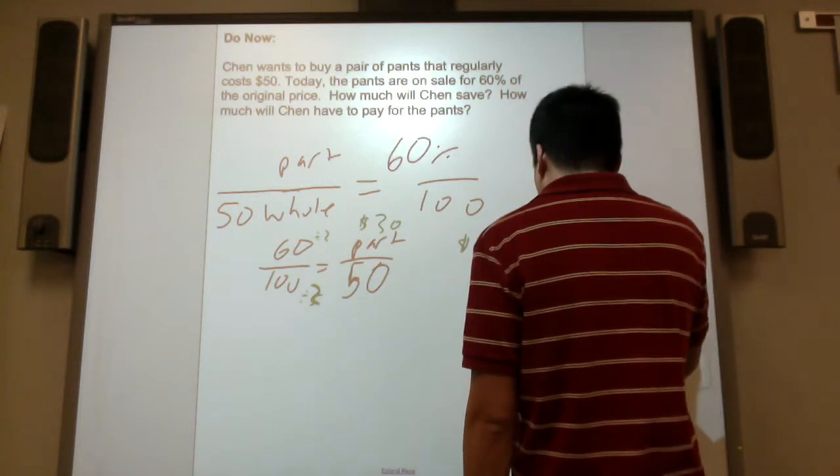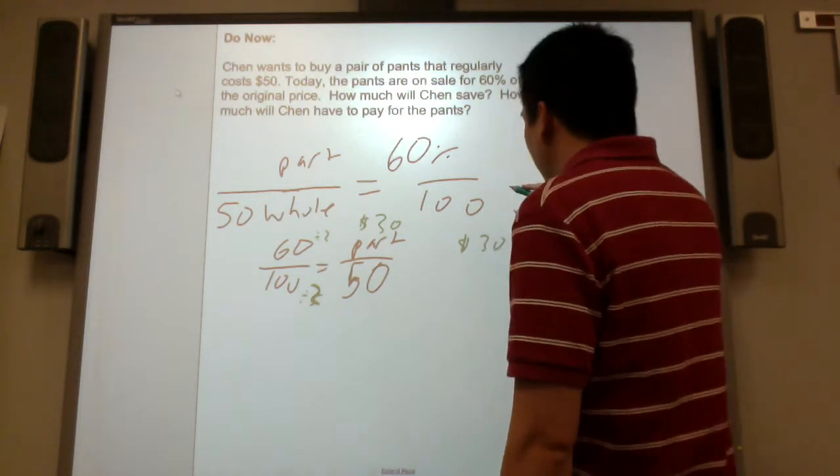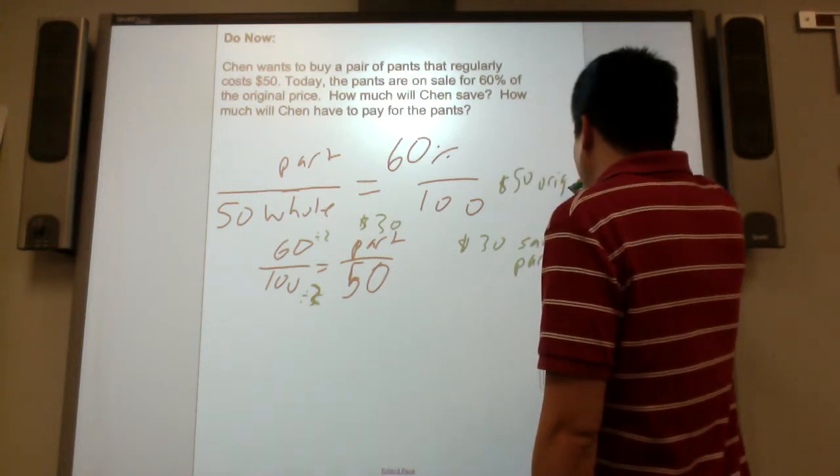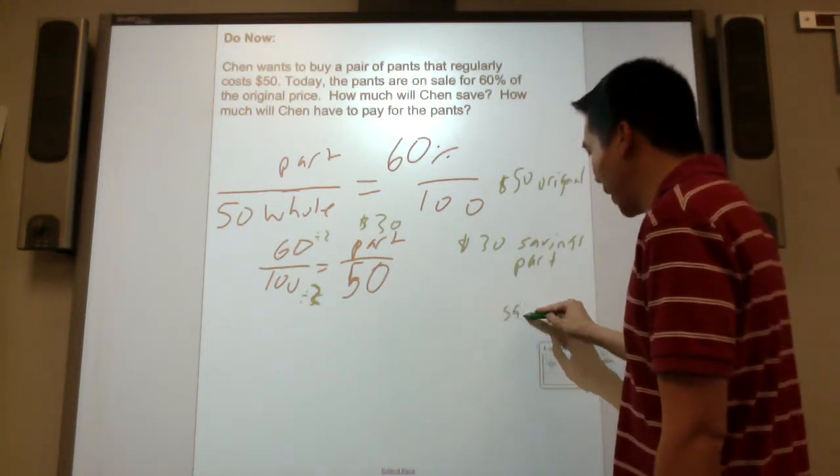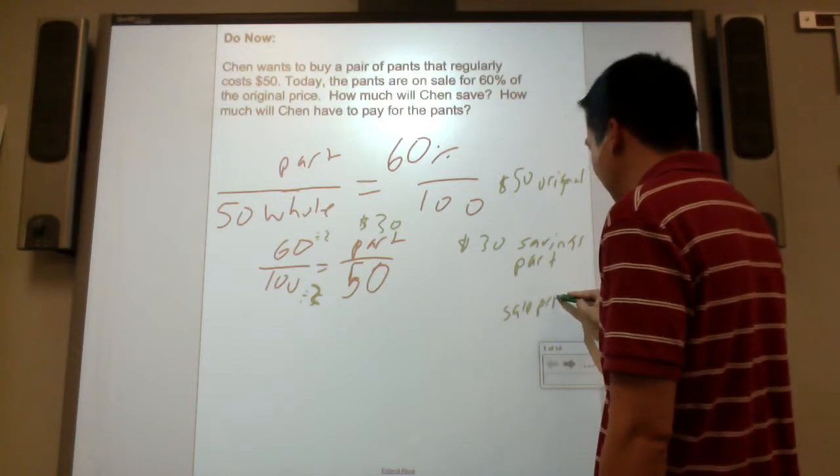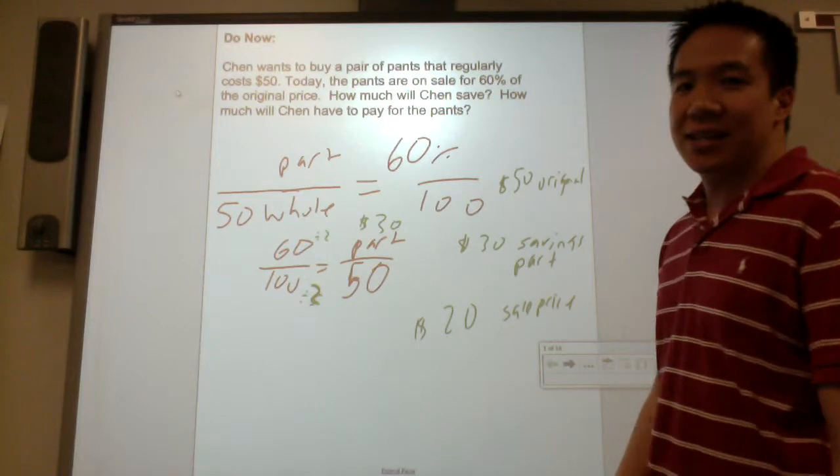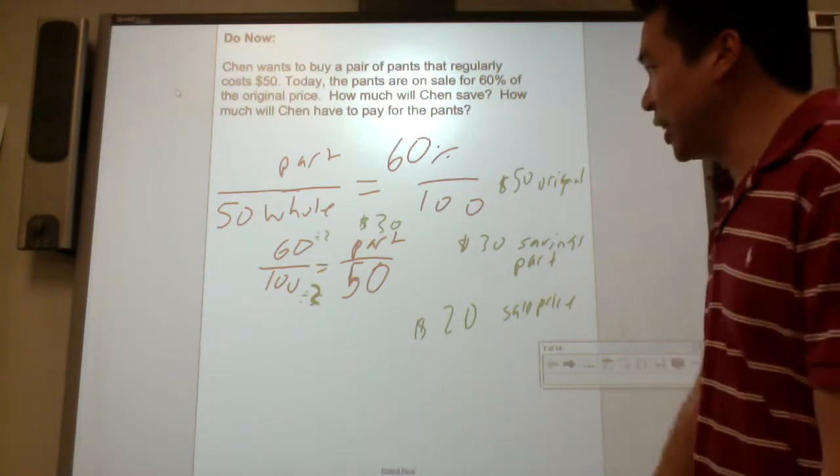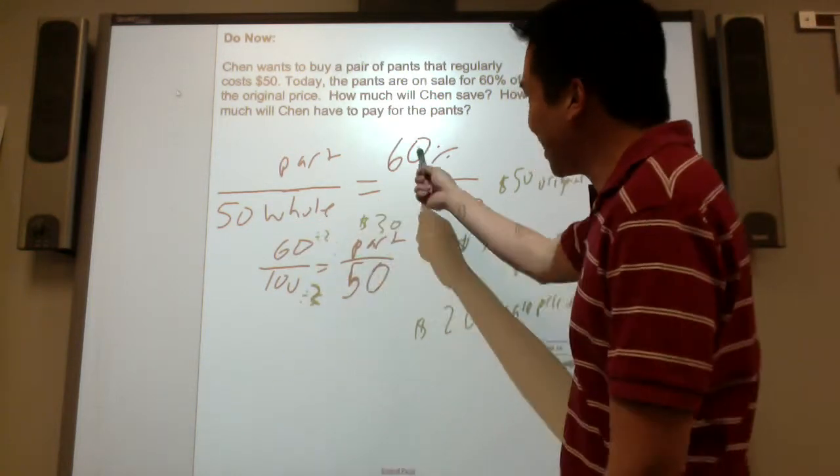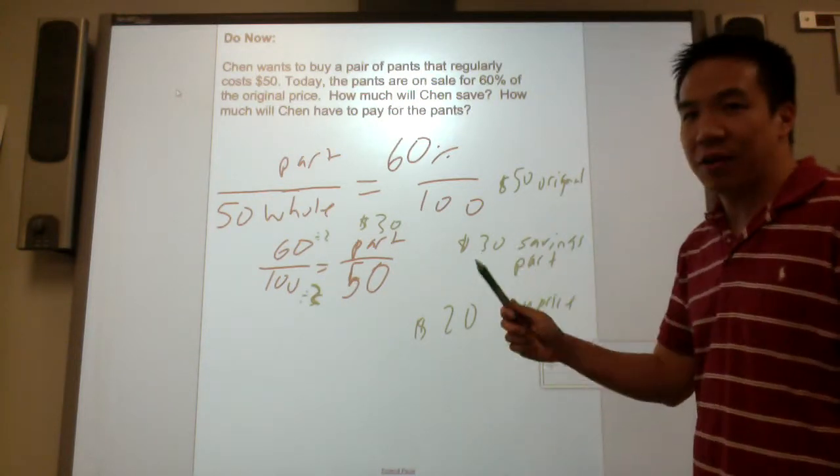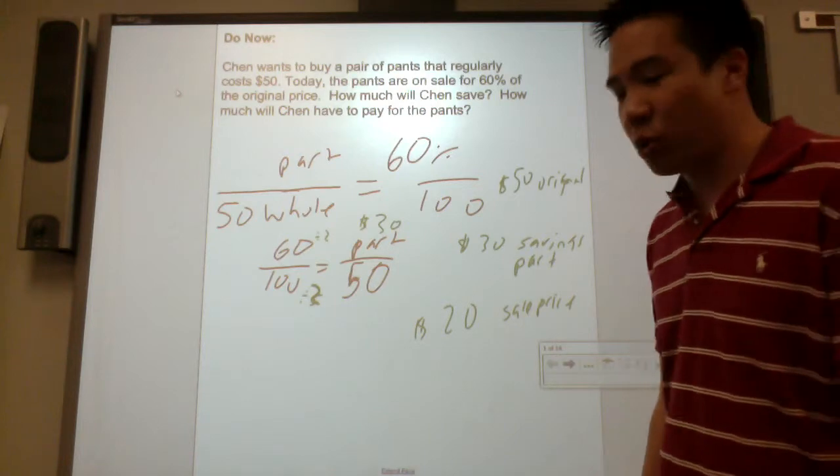That is part of the price you save. But if the original price of the pants was $50, what is the sale price? How much is Chen going to escape this? $50 minus $30 is $20. That is the sale price. So originally he was going to pay $50. Because of a 60% discount, he is saving $30. The new price is $20.